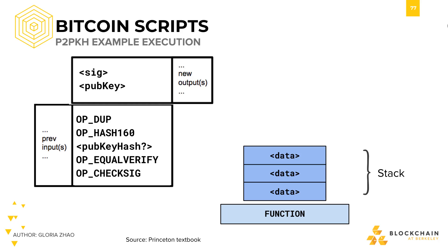Let's piece everything we've learned so far about Bitcoin script together and walk through a sample execution of pay-to-pubkey-hash. First, notice how the execution order is defined. On the left hand side, we have the script sig on top and the script pubkey on the bottom. The script sig on top is an input script to a new transaction we're creating, and the script pubkey on the bottom is an output script of an old transaction we're trying to spend from.